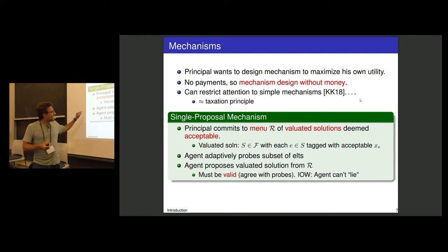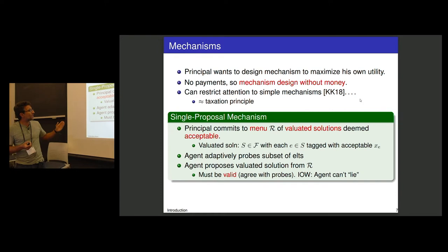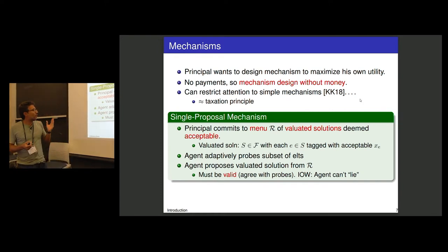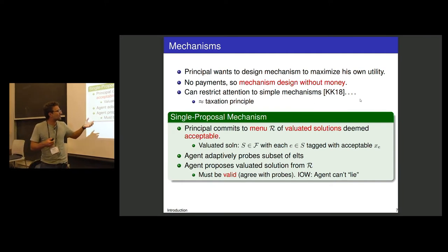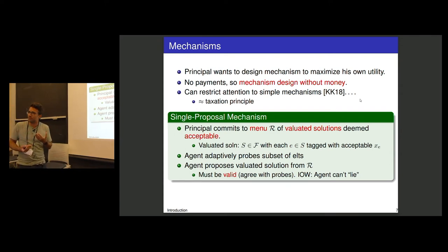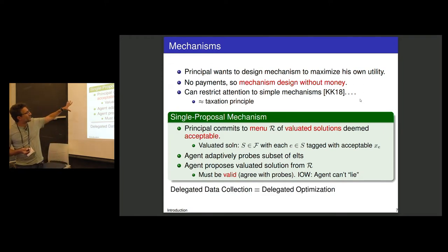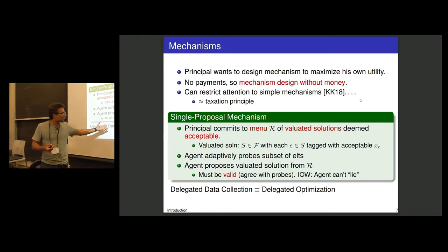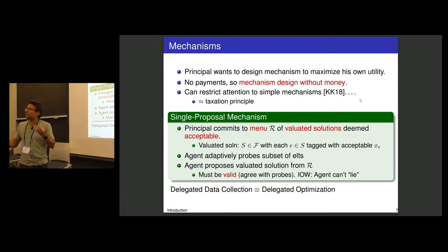After the menu is set, the agent adaptively probes some subset of elements and then proposes something from the menu. This proposal must be valid — it must agree with the results of their probes, since the agent can't benefit by lying because they must provide verifiable information. A consequence is that there are two equivalent ways to view this: either you delegate data collection, or you delegate the full optimization problem. Those two perspectives are equivalent in this model.